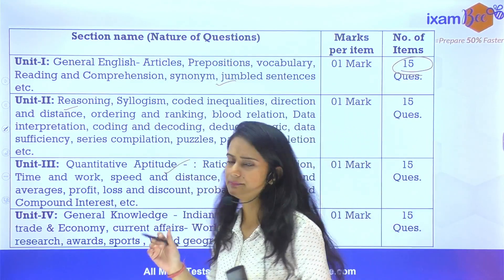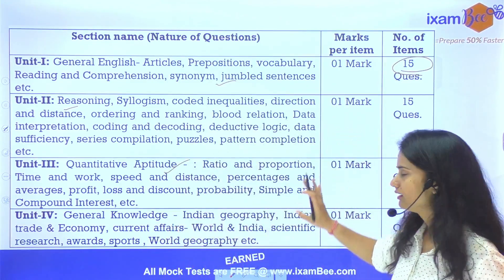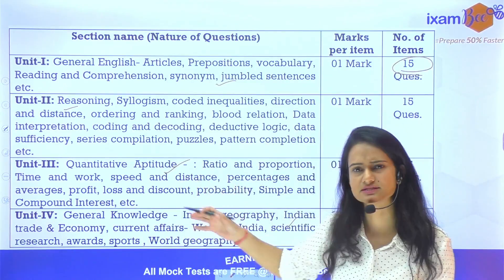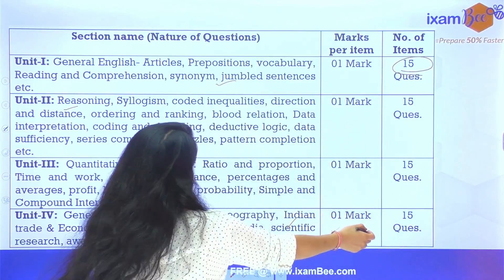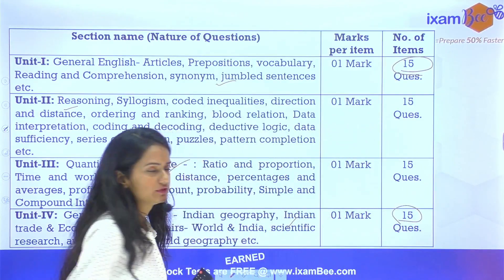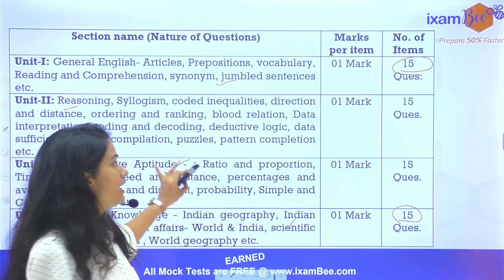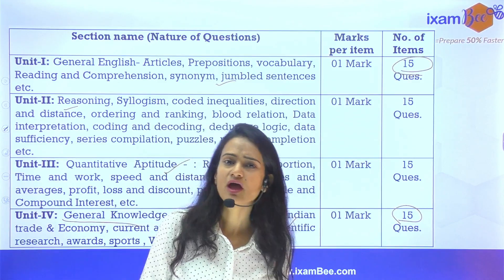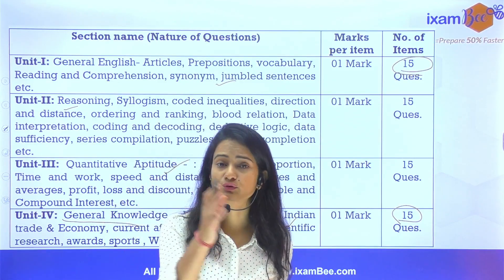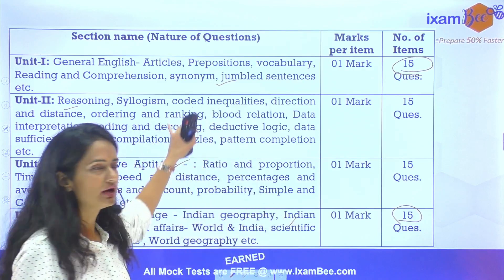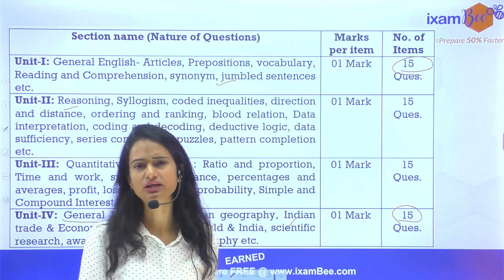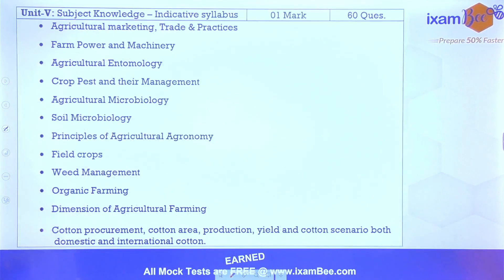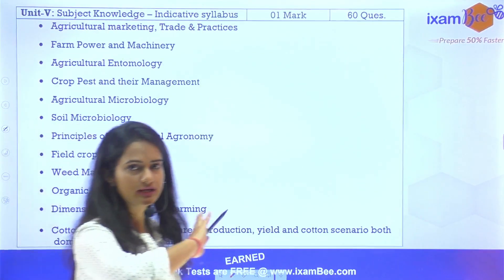Third hamara Quantitative Aptitude hai, isme bhi 15 ka weightage hai. Aur fourth jo hai woh hai GK, General Knowledge, General Awareness, history, civics — isme sara kuch aayega, 15 questions hai aur 1-1 marks ke. Toh ye, thoda aap bol sakte ho ki isme sirf ek GK wala ya General Awareness wala section hai joh aapko extra prepare karna padega. Agar aap AFO ke liye prepare kar rahe ho, toh QRE toh already aap usme bhi prepare kar rahe ho, isme sirf aapko GK ek extra prepare karna padega.